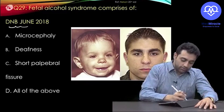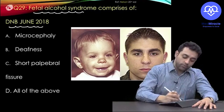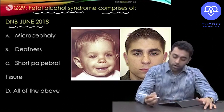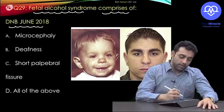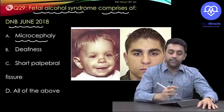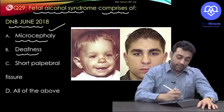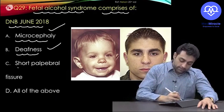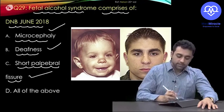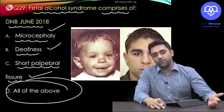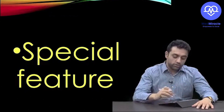DNB June 2018 question: Fetal Alcohol Syndrome comprises of what? Does it include microcephaly? Yes. Deafness? Yes. Short palpebral fissure? Yes. So the answer is all of the above.